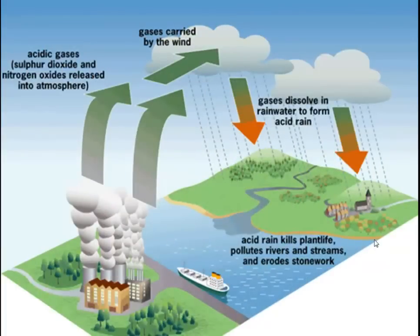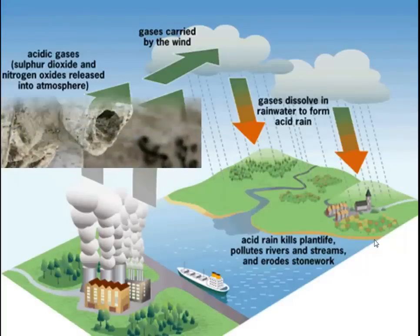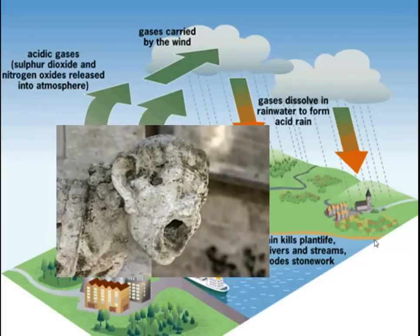For the sake of completion, acid rain also erodes stonework — though we're not so concerned about stonework in biology. Here is some eroded stonework, probably made out of limestone. Limestone is mainly calcium carbonate, and calcium carbonate, as you'll recall from chemistry, will dissolve very nicely if you put it in acid. So if acid rain lands on it, it'll dissolve it away and you'll get some nice fizzing carbon dioxide given off.